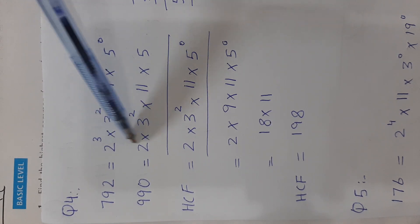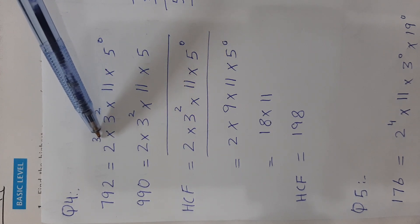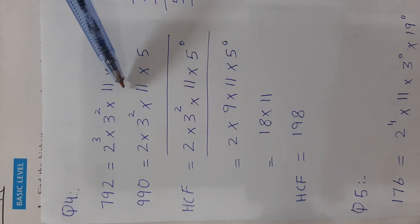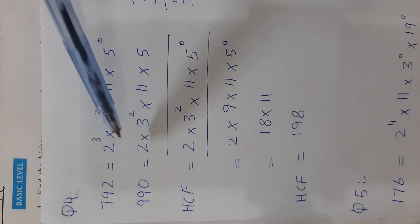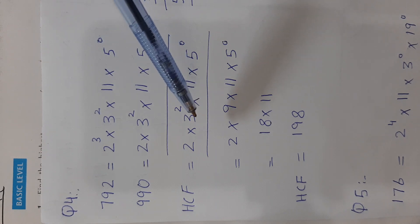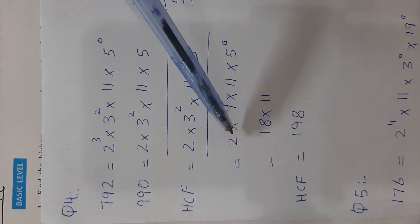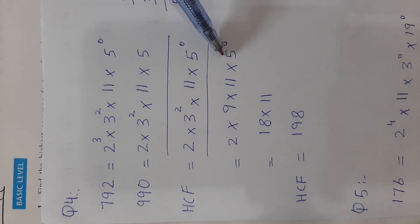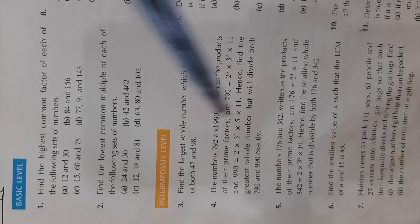From the column of 2, take out 2¹ as it is least compared to 2³. From the column of 3, take out 3². From the column of 11, take out 11¹ since the powers are the same. From the column of 5, take out 5⁰ as the lesser power. So HCF = 2 × 3² × 11 × 5⁰ = 2 × 9 × 11 × 1 = 198.